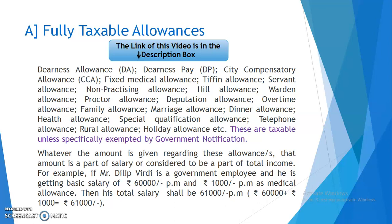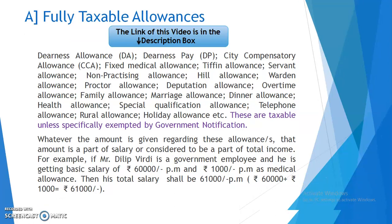For example, if Mr. Dilip Vidhi is a government employee and he is getting a basic salary of Rs. 60,000 per month and Rs. 1,000 per month as medical allowance, then his total salary shall be Rs. 61,000 per month — that is Rs. 60,000 plus Rs. 1,000 equals Rs. 61,000.